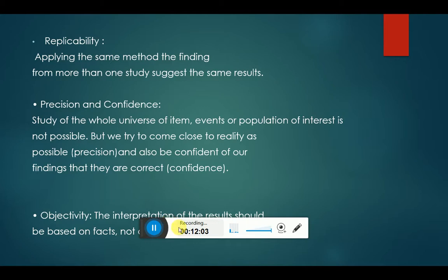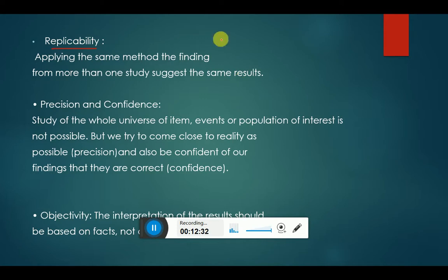The next quality is replicability, which simply means repetition. Applying the same method, findings from more than one study suggest the same results. For example, every time you add 2 plus 2, the result will always be 4. This consistent quality is simply known as replicability.